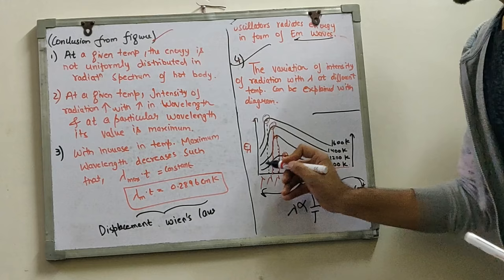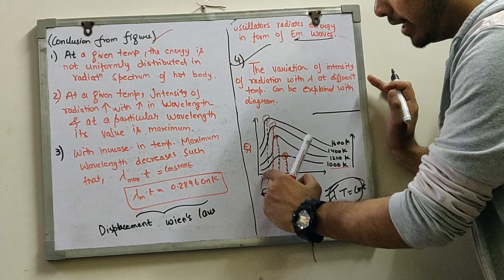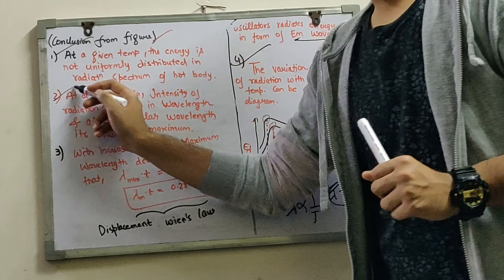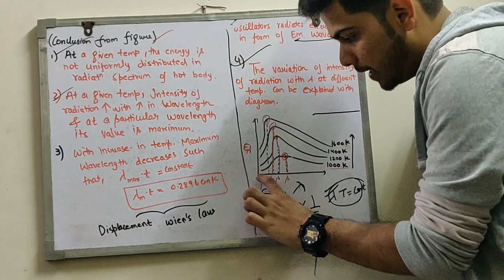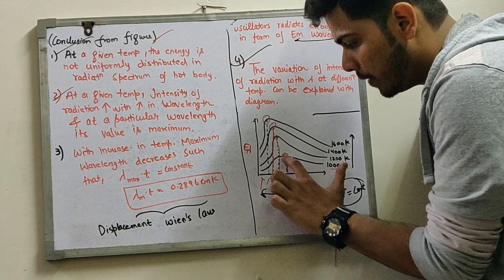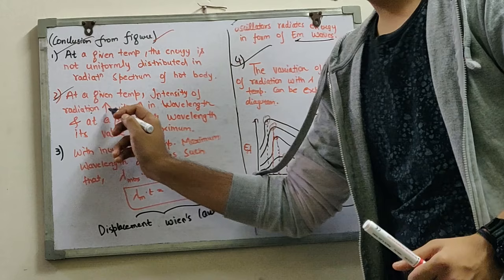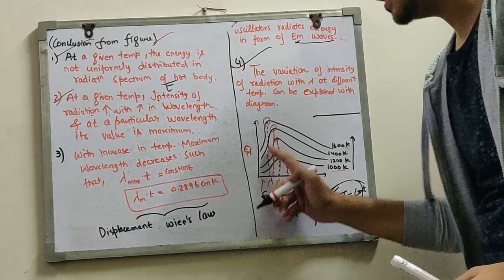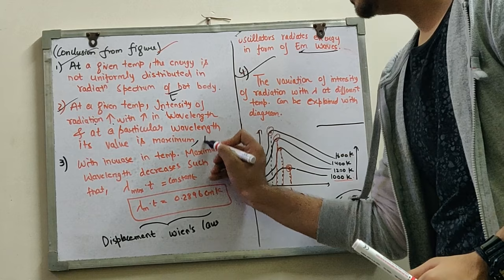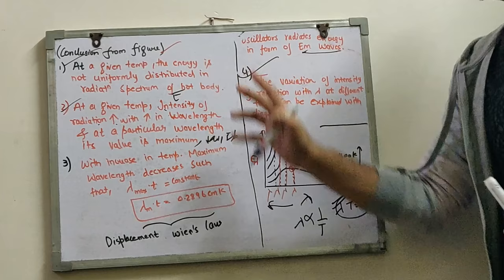From this figure, we draw the following conclusions. First: at a given temperature, the energy is not uniformly distributed in the radiation spectrum of a black body — sometimes it is maximum at a particular wavelength value, sometimes minimum, it is not uniform. Second: at a given temperature, intensity of radiation increases with increase in wavelength up to a particular lambda value where it is maximum, and then decreases as the wavelength decreases further.